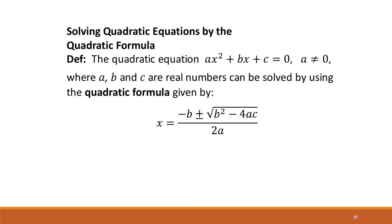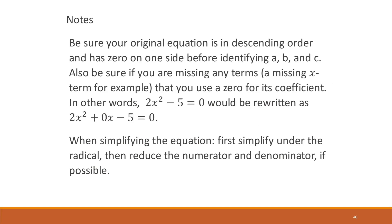The quadratic formula came from completing the square, and you need to know it for your next test. The quadratic formula always works, which is especially useful if you're not comfortable with factoring. If a term is missing, write it as a zero term. For example, for 2x² − 5, your A = 2, B = 0, and C = −5.